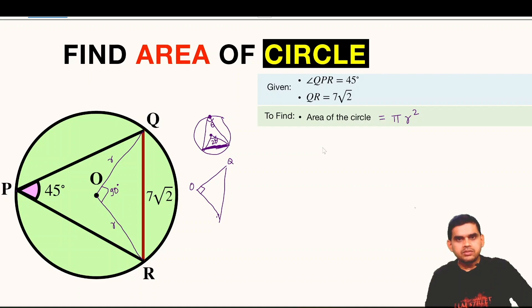Point is Q. This is capital R. Now this is small r. This is small r. And QR length is given to us that is 7 root 2.